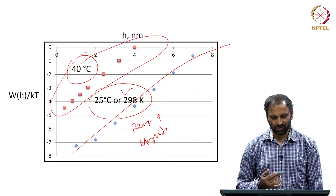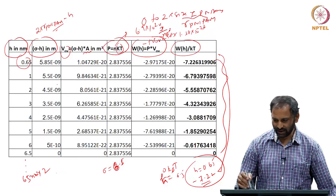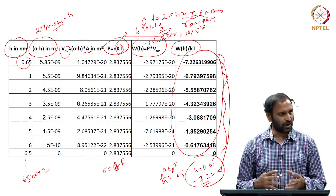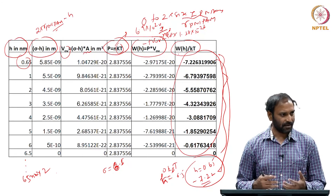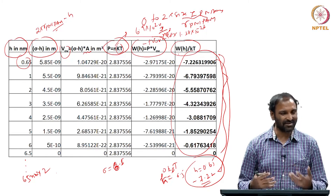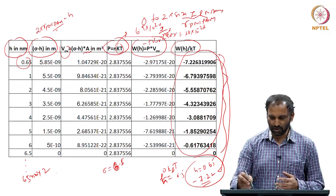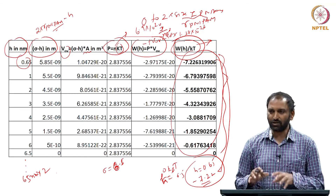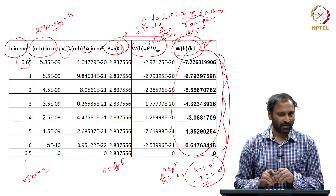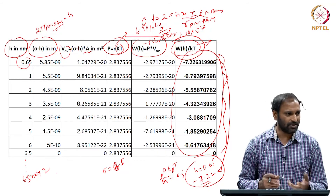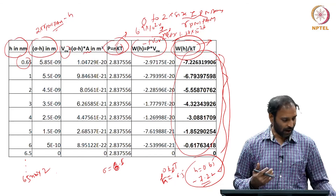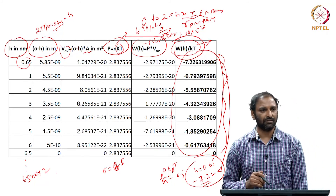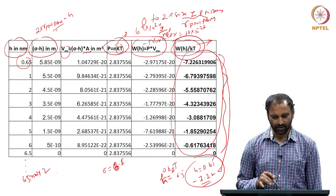One good thing to note is that the numbers obtained seem reasonable. Typically when people discuss attractive strength they talk about values in the tens of kBT or several tens of kBT. If you get values like 1000 kBT, those would be unreasonable. When doing such calculations you should always scale with kBT and check the numbers — that gives you an idea of whether these interactions are more dominant than Van der Waals and whether they are comparable. This concludes the discussion of depletion interactions and brings us to the end of colloid-polymer mixtures.